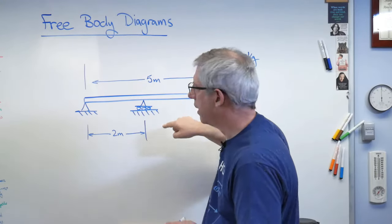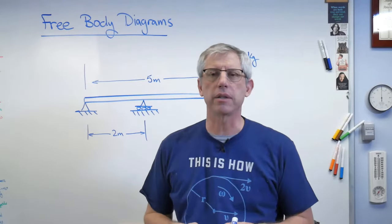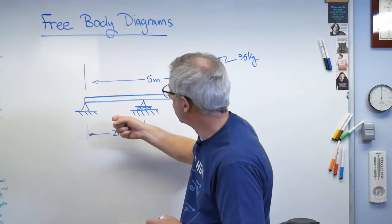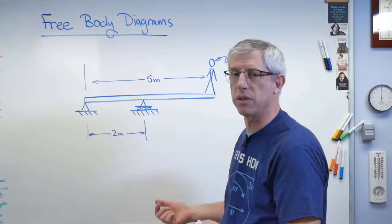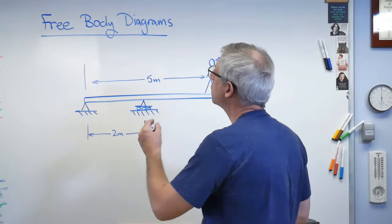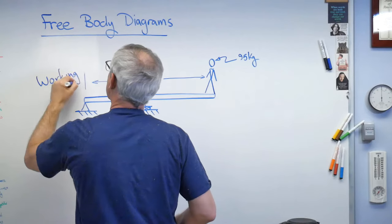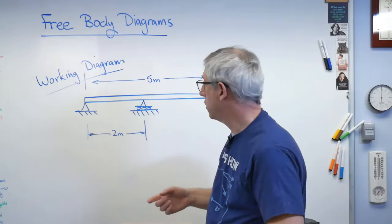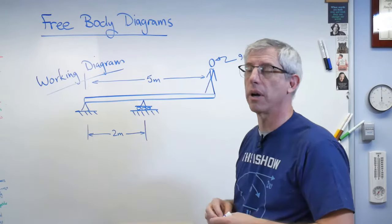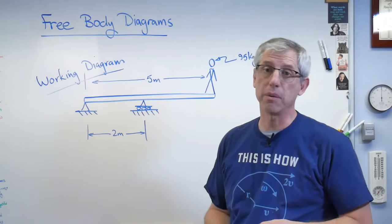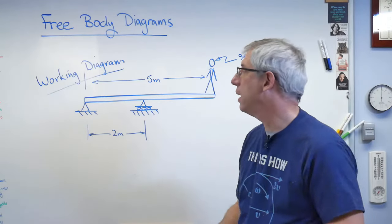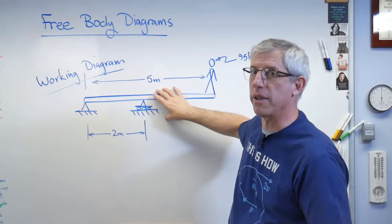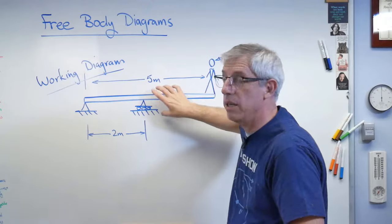So we're going to draw a free body diagram of something. Now, the thing you draw the free body diagram of, if I can end a sentence with a preposition, is the thing you want to analyze. Is the thing about which you want to know the forces. Well, do I want to know the forces generated down into the ground here? In this case, no. I want to know what forces are acting on the board. So this is what we would call a working diagram. A working diagram has all the information you need to start the problem. So it's got things like dimensions, and you know what the boundary conditions look like, and you know what the loads are. That's a working diagram.